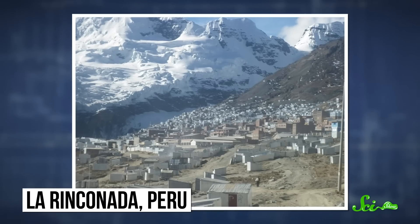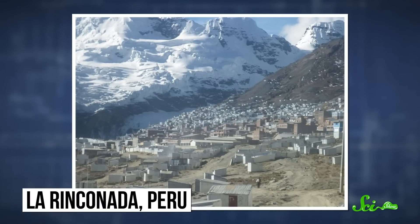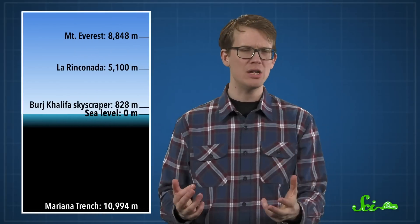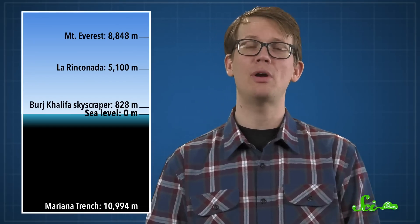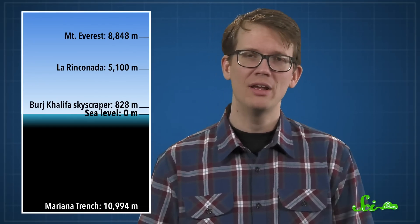The highest permanent human settlement is a tiny mining village called La Rinconada in Peru, which is about 5,100 meters above sea level. Considering that some people start to get altitude sickness around 2,500 meters, that's pretty intense.